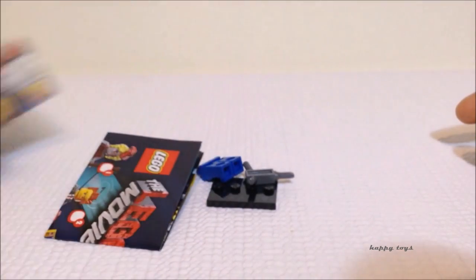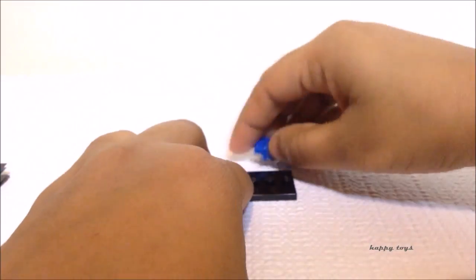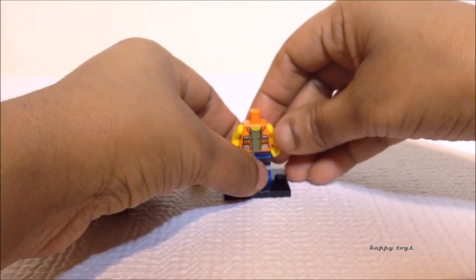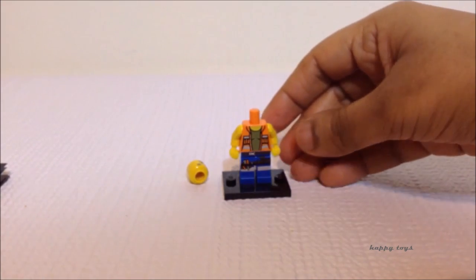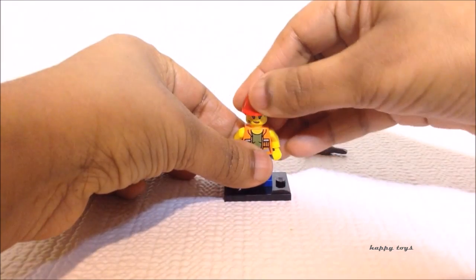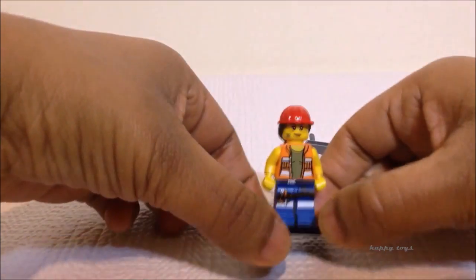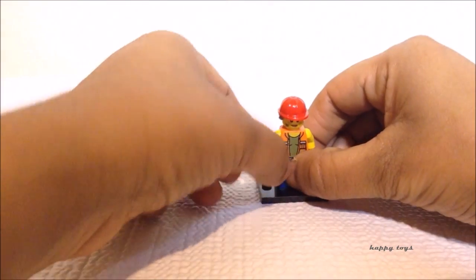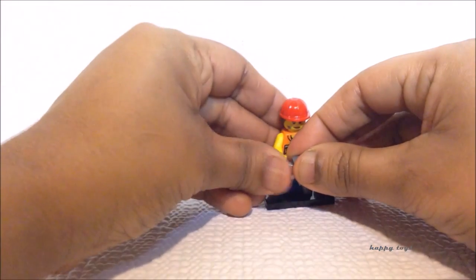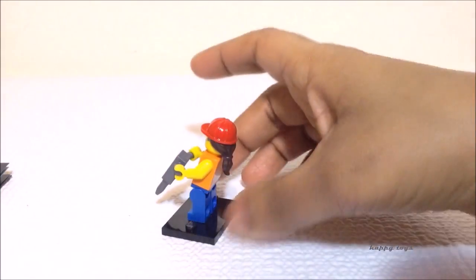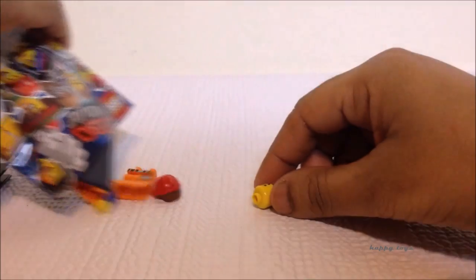Here we go for the next pack. Right now, look at the next pack, it's a female construction worker. Look at the face, you could see the lipstick as well. Also, the hat has the female hair in it. It's more attractive. Also, she has a jackhammer. Here we go for the next pack, who is this?